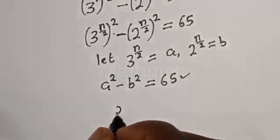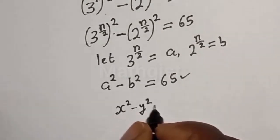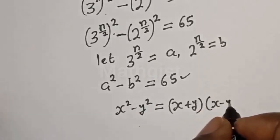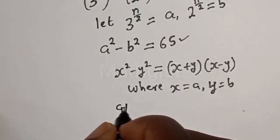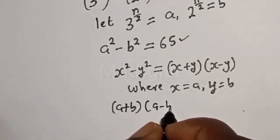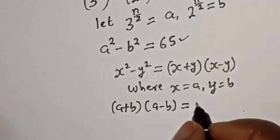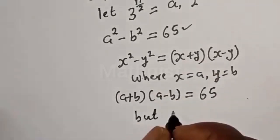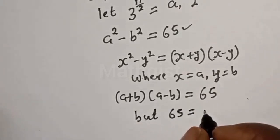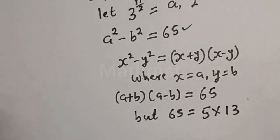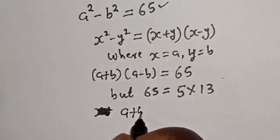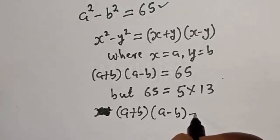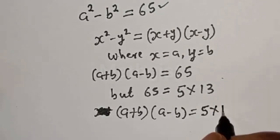Using the rule that x squared minus y squared equals (x+y)(x-y), we get (a+b)(a-b) = 65. Now, 65 = 5 multiplied by 13. So for an integer solution, (a+b)(a-b) = 13 multiplied by 5.